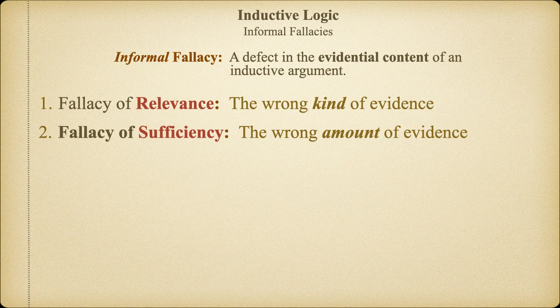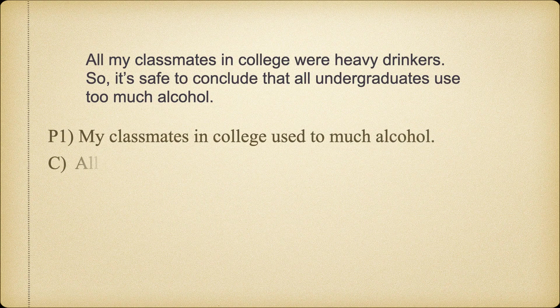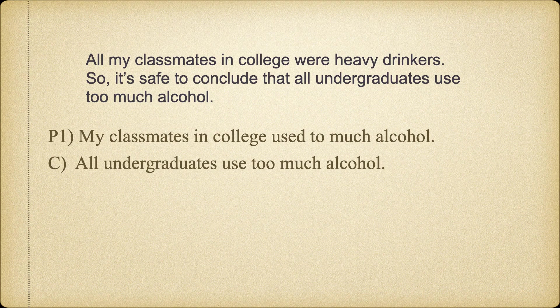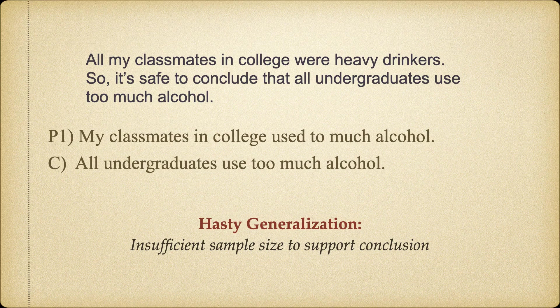The second group of fallacies we'll examine have to do with the sufficiency of the evidence. Do I have enough evidence to make my conclusion more probable than not? For example: all my classmates in college were heavy drinkers, so it's safe to conclude that all undergraduates used too much alcohol. Notice here I'm drawing a conclusion about all college undergraduates based on my personal experience with a few undergraduates. We already learned in term logic that it only takes a single counterexample to falsify a universal claim, which is why we want to be careful with generalizations — we don't want to be too hasty. Satisfactory evidence for this conclusion would require a much larger sample, and we'd probably also want to weaken our conclusion, saying most or many instead of all, since induction can only get us probable conclusions, not certain ones.